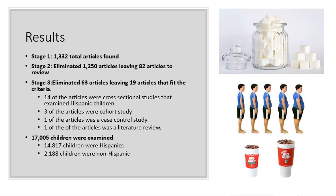When viewing the results, I started off with 1,332 total articles. After an elimination process, I eliminated 1,250 articles, leaving 82 articles to be reviewed. Once I looked through those 82 articles and did my final eliminations, I eliminated 63 articles, leaving 19 that fit the criteria the best.